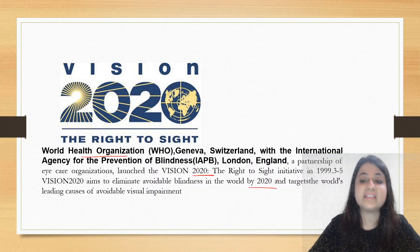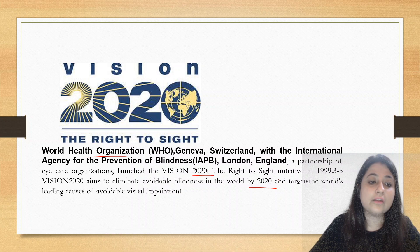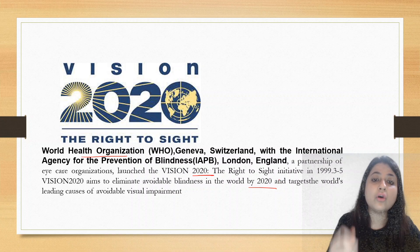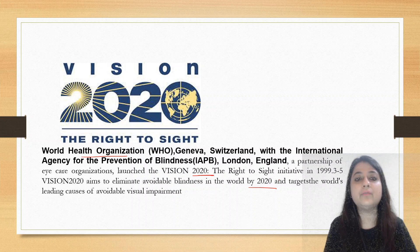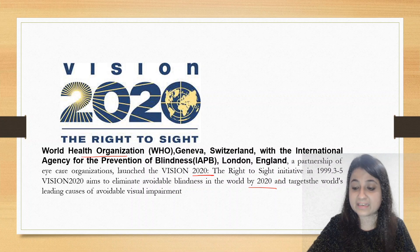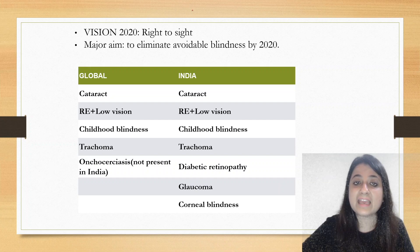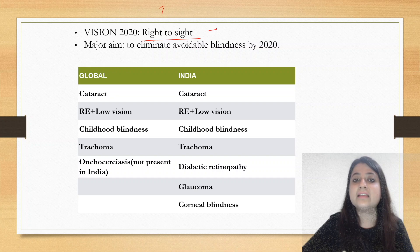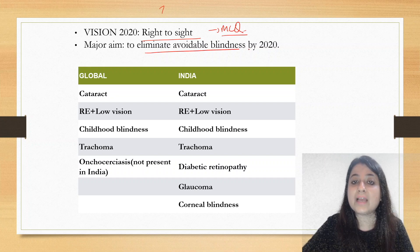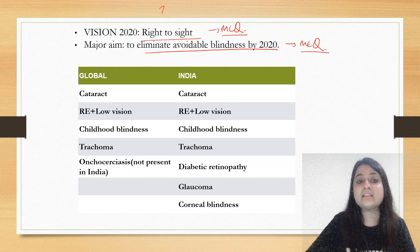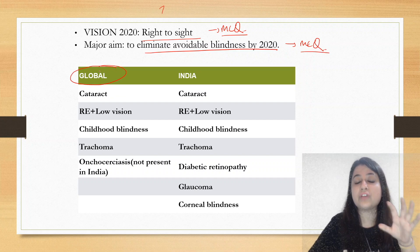They wanted to eliminate all avoidable blindness in the world by 2020, targeting the world's leading causes of avoidable visual blindness. The questions they ask include: what was the aim, and what was the logo of this initiative? The logo is 'Right to Sight' — this can come as an MCQ. The major aim is to eliminate avoidable blindness by 2020.